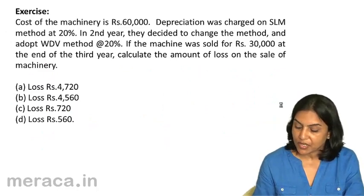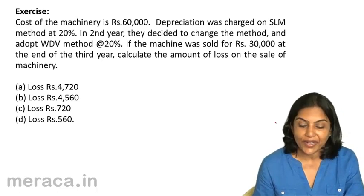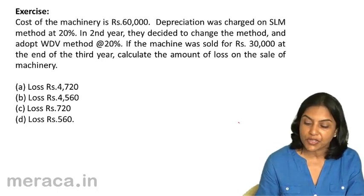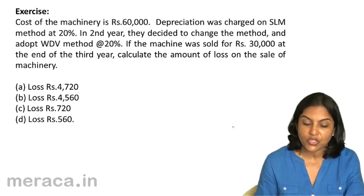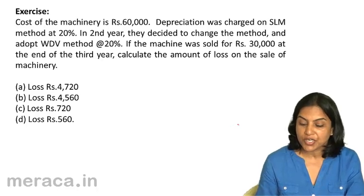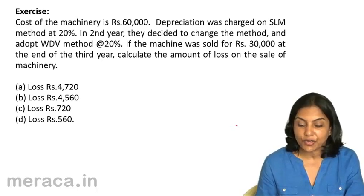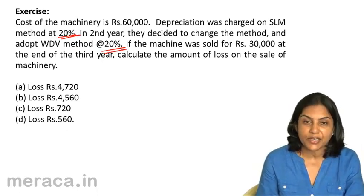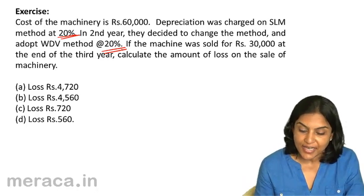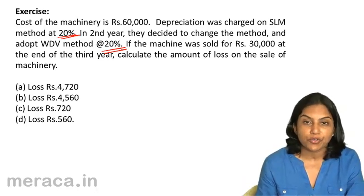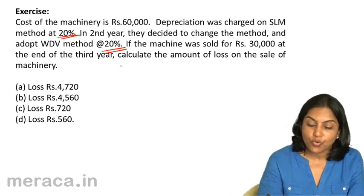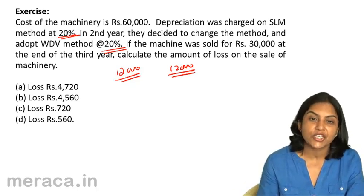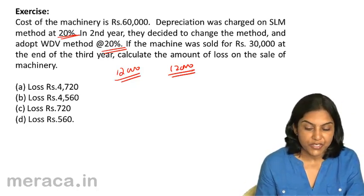Let us take one more exercise. The cost of machinery is 60,000 and depreciation was charged on straight line method at 20%. In the second year, they decided to change the method and adopt written down value method at 20%. The machine was sold for 30,000 at the end of the third year; calculate the amount of loss on the sale of machinery. Since both SLM and WDV use the same rate of 20%, and the change was effected in the second year itself, the depreciation of 12,000 is the same under both methods. So there is no change in book value at the end of the first year.